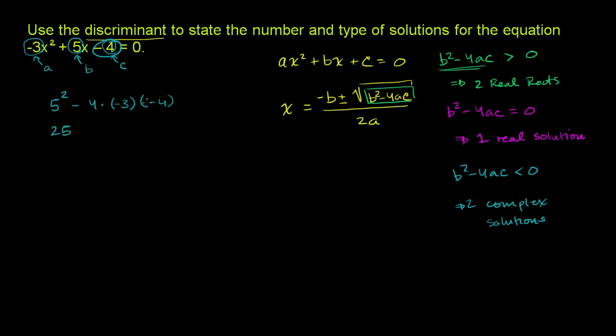And so this is 25. And then -3 times -4, that is positive 12. And then 4 times 12 is 48, but we have a negative out here. So 25 - 48. And 25 - 48, we don't even have to do the math. We can just say that this is definitely going to be less than 0. This is equal to -23. Which is clearly less than 0. So our discriminant in this situation is less than 0. So we are going to have two complex roots here, and they're going to be each other's conjugates.